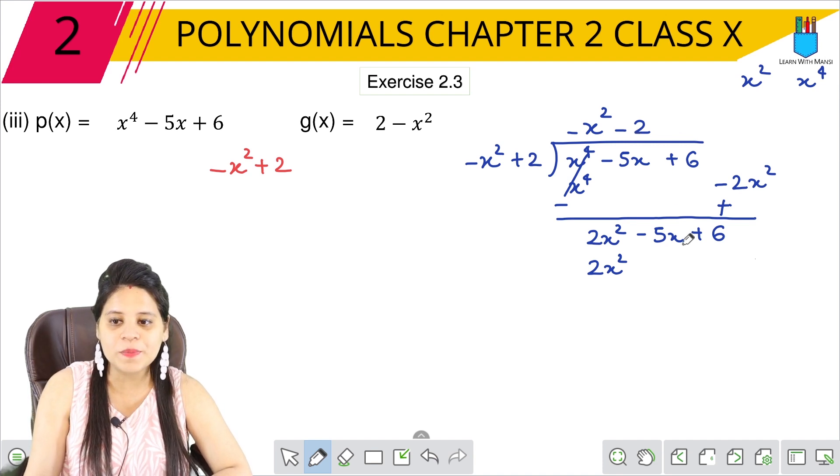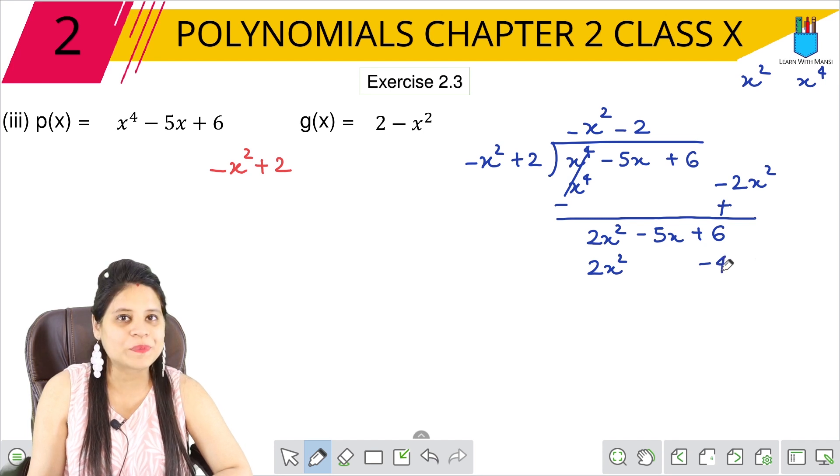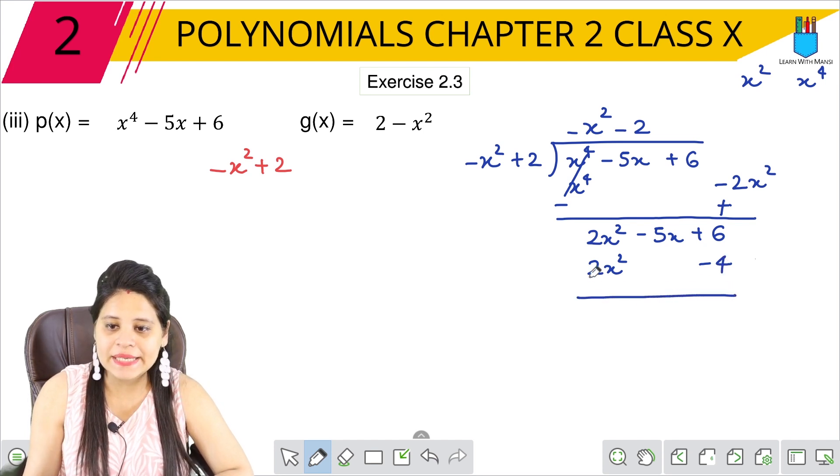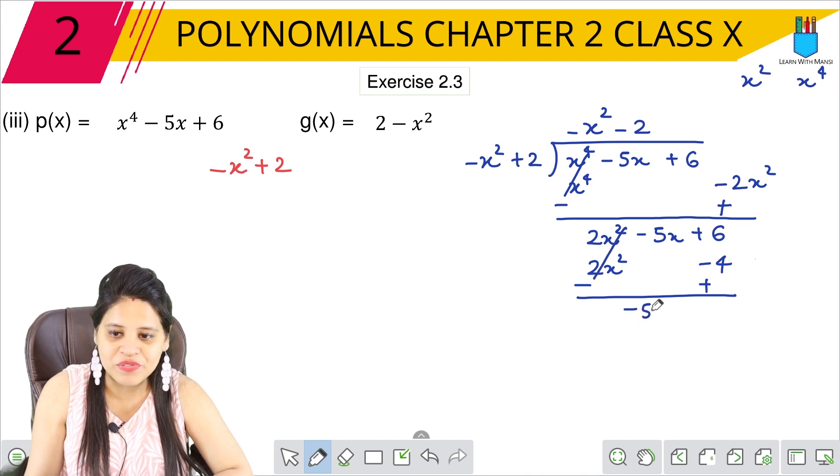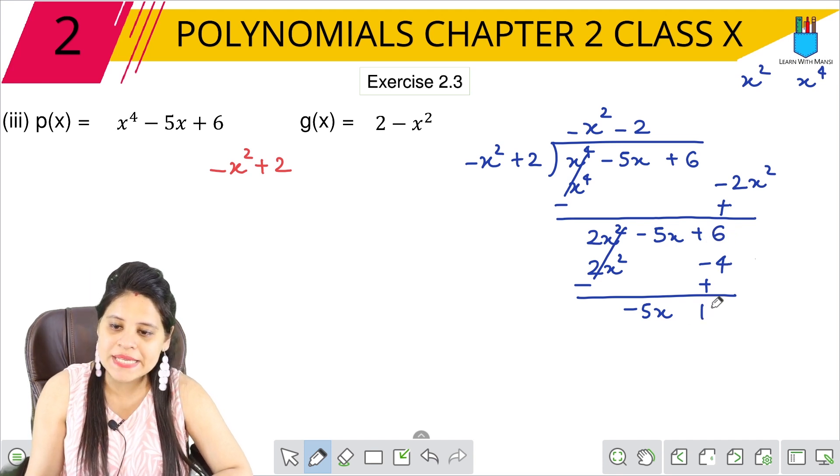2 into 2 is 4. Also, plus minus minus, so this is minus 4. Got it? So again, this will be minus, this will be plus, this will be cut. Here it will be minus 5x, and this will be plus plus plus: 6 plus 4 is 10.